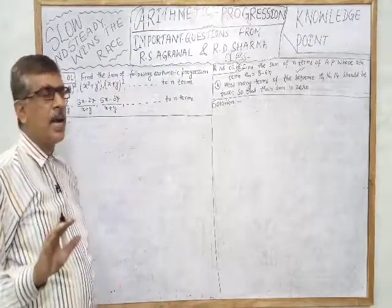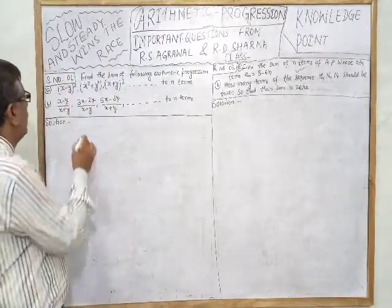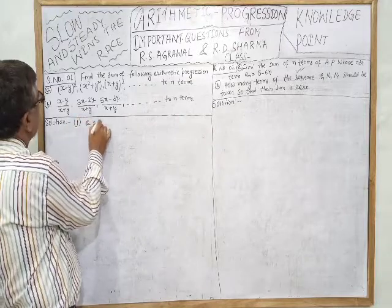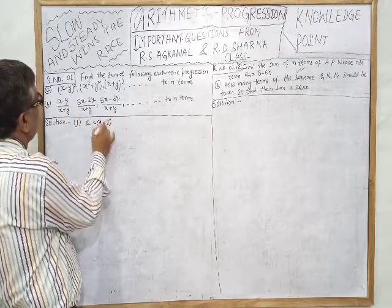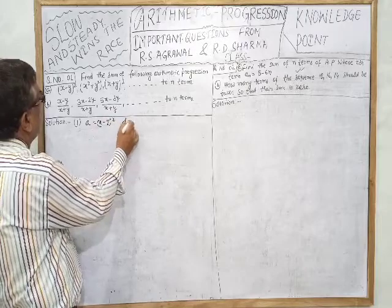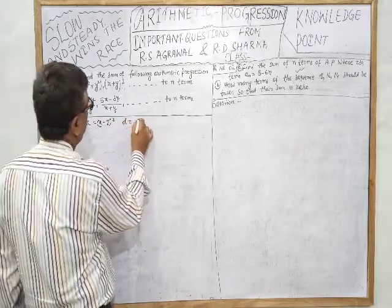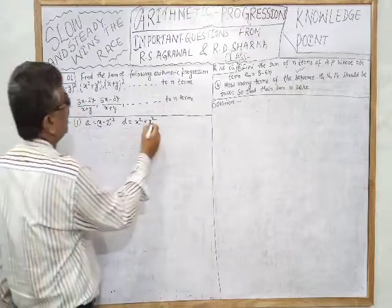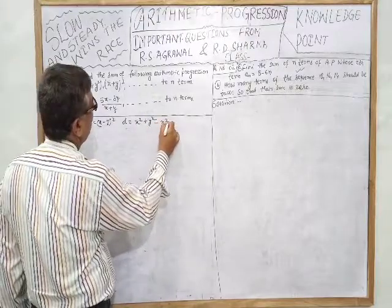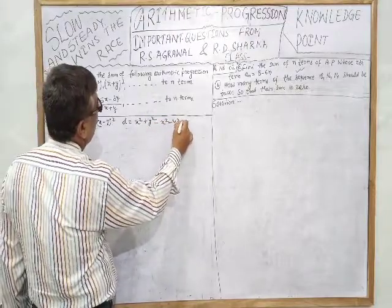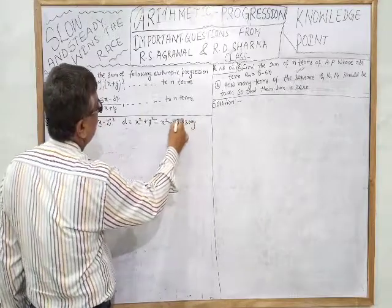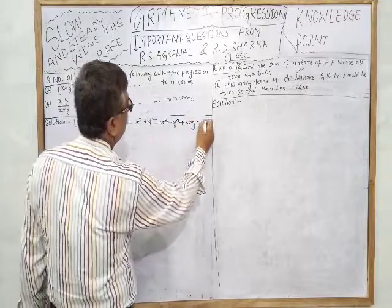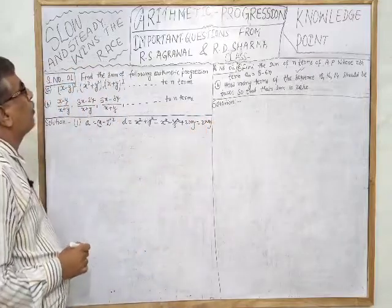Now, to find the common difference d, subtract the first term from the second term: x²+y² minus (x-y)², which gives x²+y² minus x²-y²+2xy. This simplifies to 2xy, so d = 2xy.